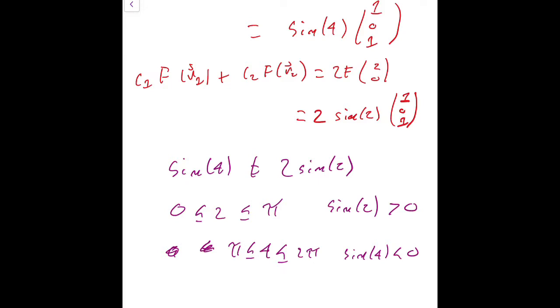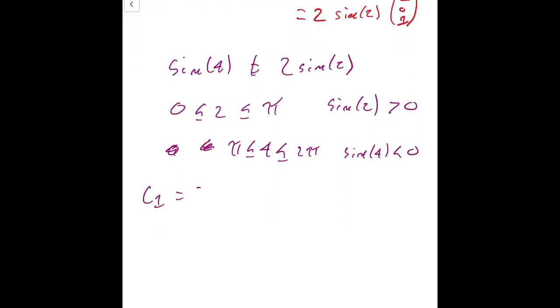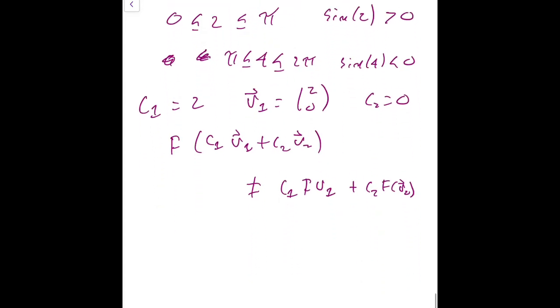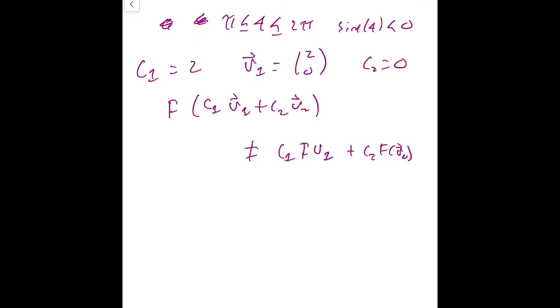So, in other words, for the particular vector, or for the particular constants c1 equals 2 and v1 equals (2, 0) and c2 equals 0, so it doesn't matter what v2 is. For these particular values, we see that this is not linear. We see that F applied to c1 v1 plus c2 v2 does not equal c1 F applied to v1 plus c2 F applied to v2. In other words, F is not linear, because we can find a particular choice of vectors and constants such that the equality in the definition of linear transformation is not true.